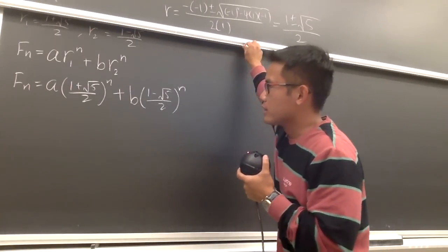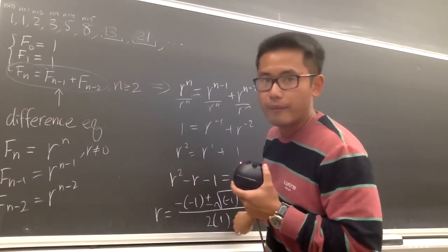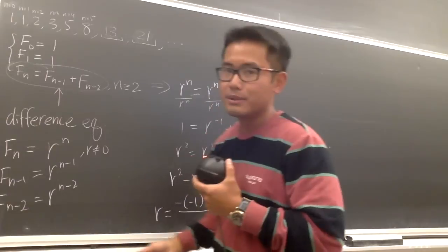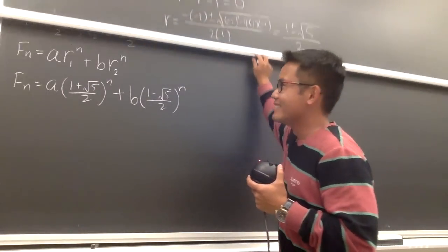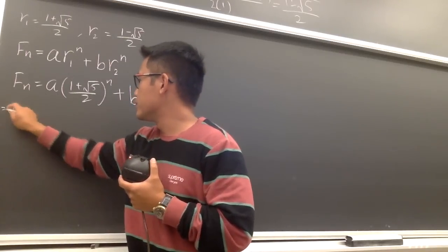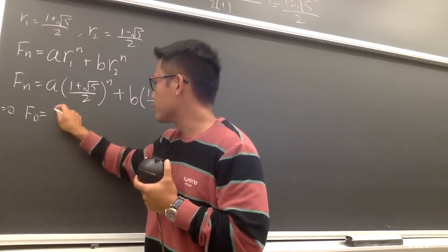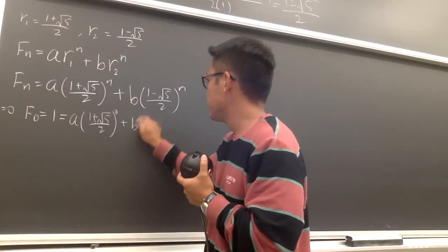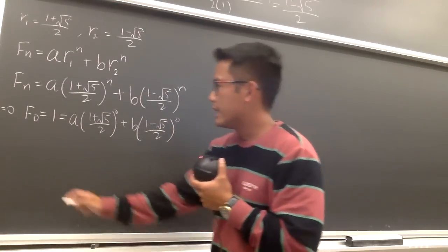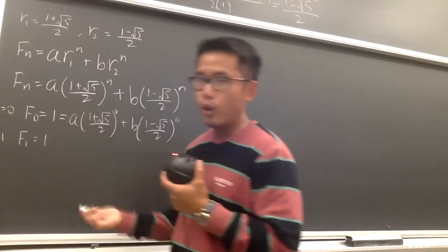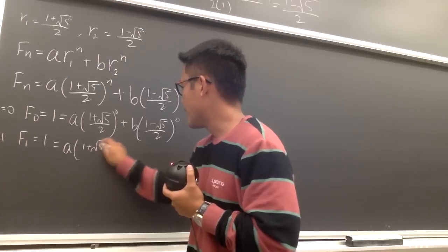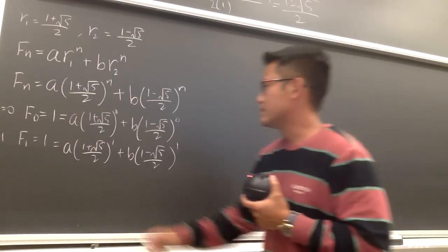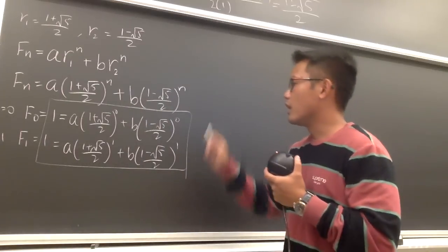To solve for a and b, we use our initial conditions. When n equals 0, we have F(0) = 1, so a·((1+√5)/2)⁰ + b·((1−√5)/2)⁰ = 1, which simplifies to a + b = 1. When n equals 1, we have F(1) = 1, so a·((1+√5)/2) + b·((1−√5)/2) = 1. We now have a system of two equations in terms of a and b, and if we can solve for them, we are done.